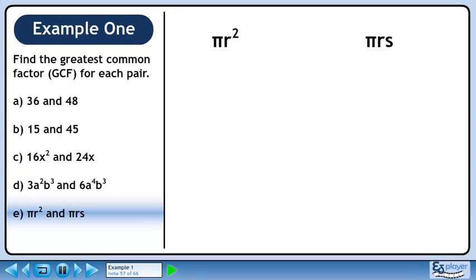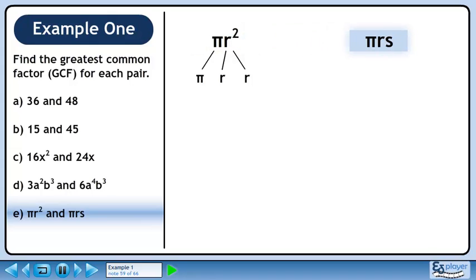In Part E, we will find the greatest common factor of πr² and πrs. πr² breaks up to π, r, and r. Now we will find the prime factors of πrs. πrs breaks up to π, r, and s.